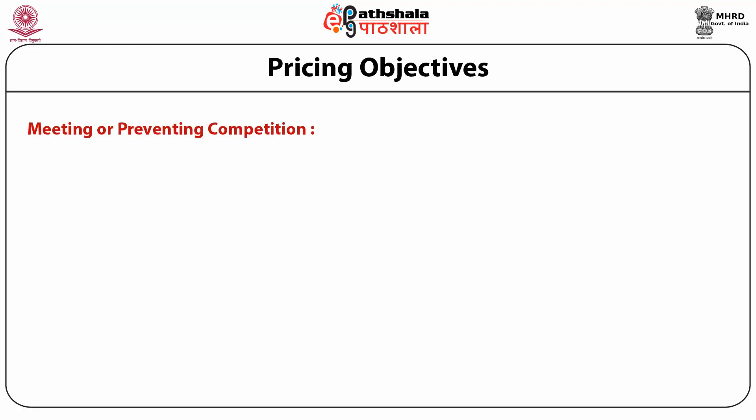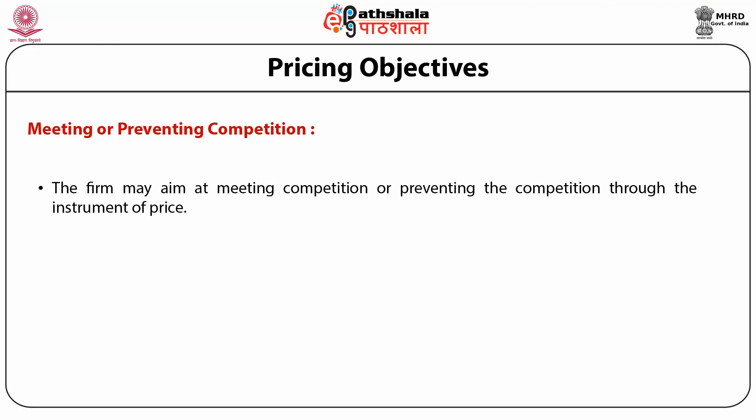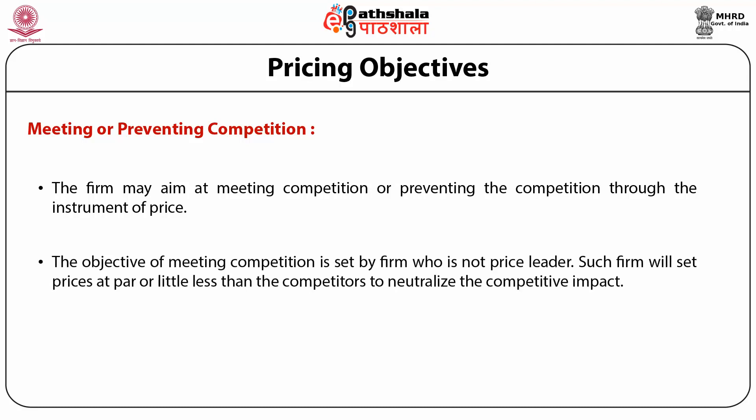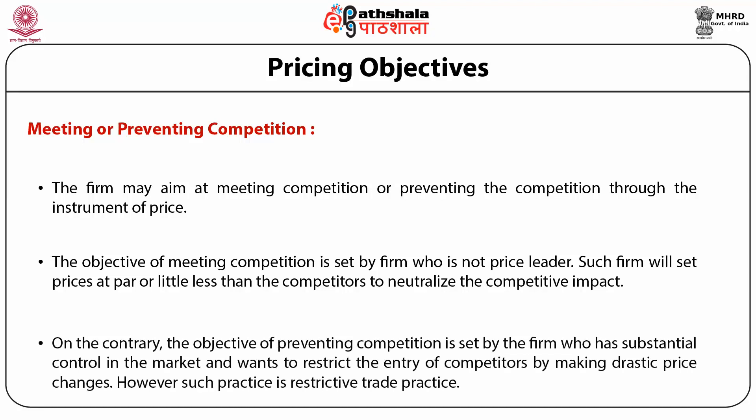Another objective is facing or meeting competition. The firm may aim at meeting competition or preventing competition through the instrument of price. The objective of meeting competition is set by the firm which is not a price leader; such firms set prices at par or slightly less than competitors to neutralize the competitive impact. The objective of preventing competition is set by firms that have substantial market control and want to restrict the entry of competitors by making drastic price changes. However, such practice is a restrictive trade practice and is normally not clearly mentioned in pricing objectives.